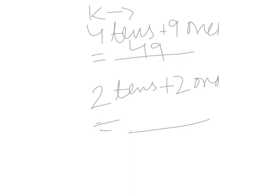The last part is two tens plus two ones. Two tens make twenty, and two ones equal two, so twenty plus two equals twenty-two. Two tens plus two ones makes twenty-two.